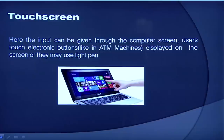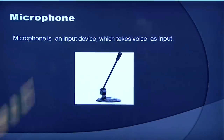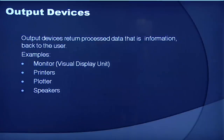The next is the touch screen. Another form of input is the touch screen, where the input can be given through the computer screen that accepts input through the monitor. Users touch electronic buttons displayed on the screen or they may use a light pen. Nowadays, smartphones, laptops, TVs and ATM machines are all using touch screen panels. The next input device is the microphone, which is an input device that takes input as voice. So we have seen the input devices.